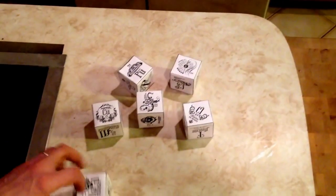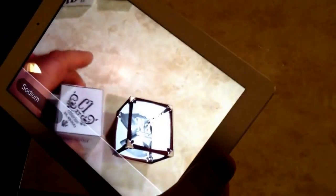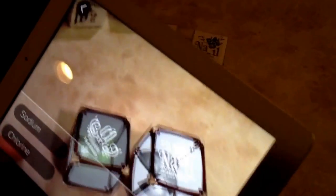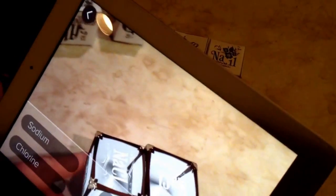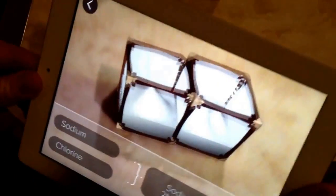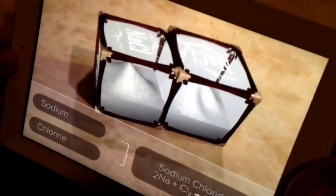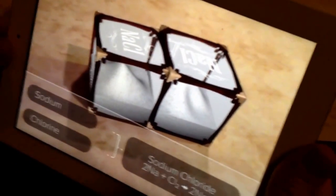When you take those elements and put them together, you can actually form compounds. So there's chlorine and sodium. And when you put those together, of course, they make sodium chloride or salt.